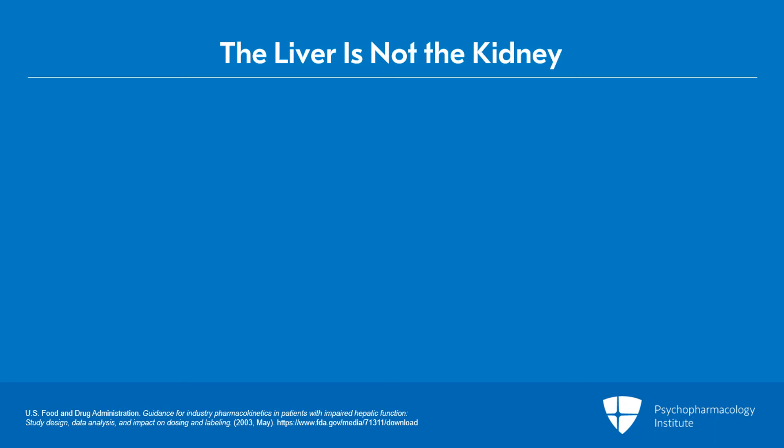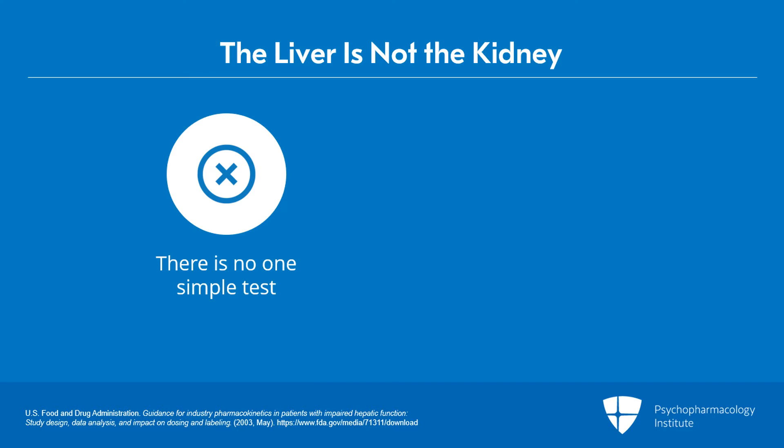I can get an estimated GFR from simple labs — just one lab — and pretty much figure out what the person's renal function is. But the liver is not the kidney. There is no one simple test. As I've mentioned, the AST and ALT are actually the wrong tests in this context.